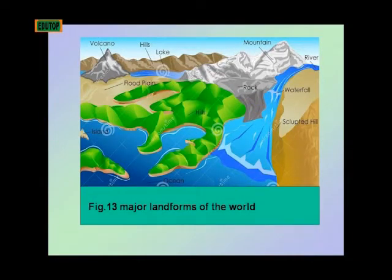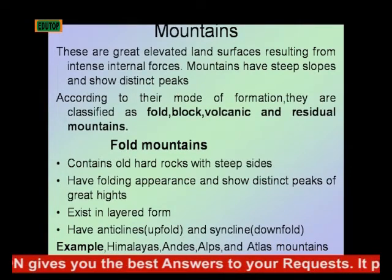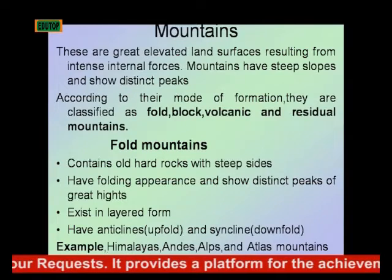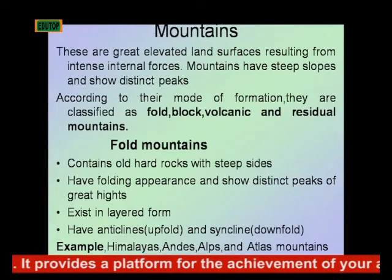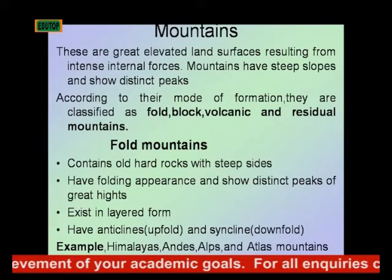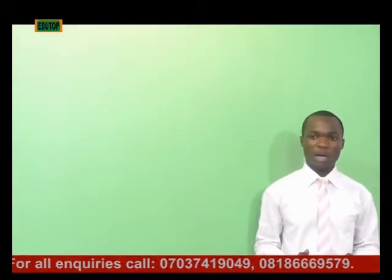Now let's look at the major landforms of the world — major landforms such as the hills, the mountains, the plains, and the lakes. Mountains are great elevated land surfaces resulting from intense internal forces. The mountains have steep slopes and show distinct peaks. According to their mode of formation, mountains can be classified as fold, block, volcanic, or residual mountains. We will consider them one after the other.